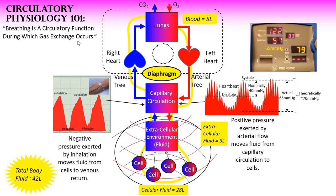Blood flows in a circle in our body. When we inhale, blood flows from the pervasive capillary circulation — which you may know is tens of thousands of miles long if stretched out end to end — into the venous tree under very low pressure, just slightly below atmospheric pressure. Air flows into the nose and into the lungs, and likewise venous blood fills the venous tree, flowing through the right heart and into the lungs to meet the incoming air.